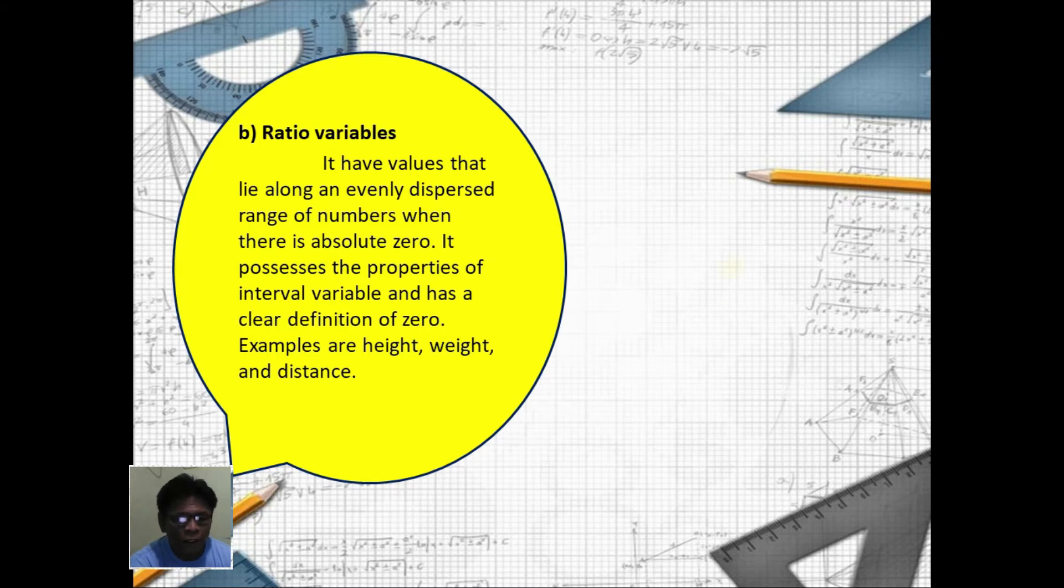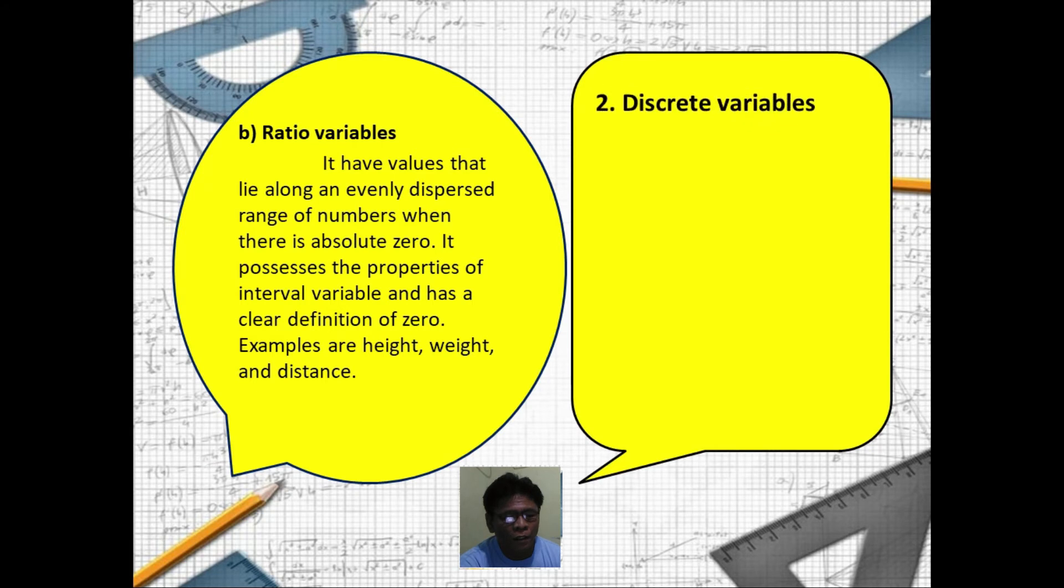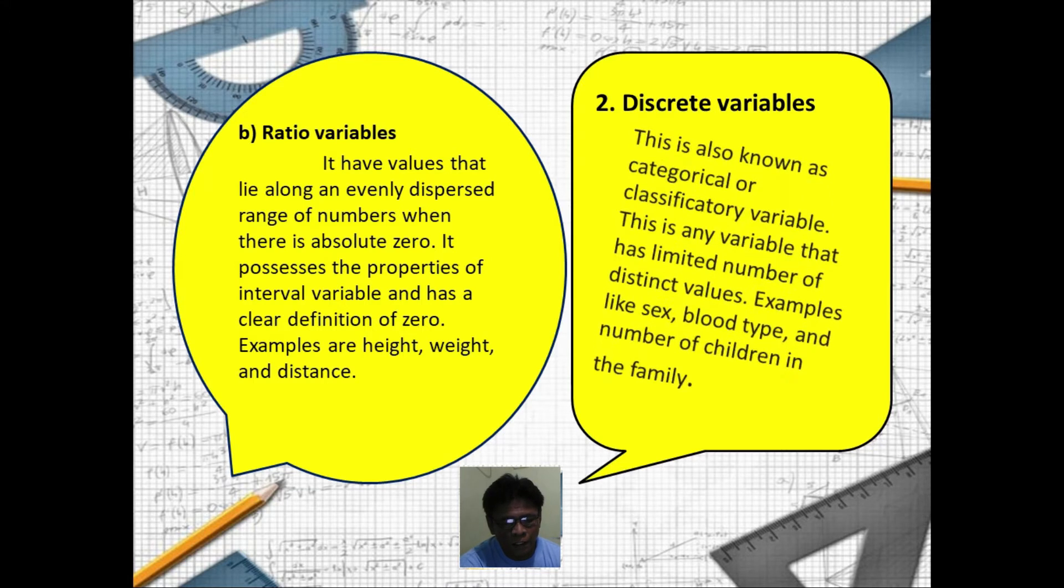Number two: the discrete variables. This is a countable variable, also known as categorical or classificatory variable. This is any variable that has limited number of distinct values.